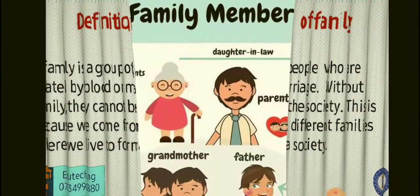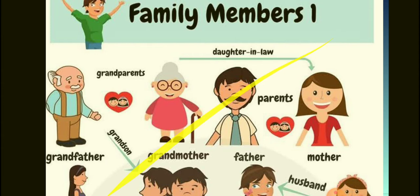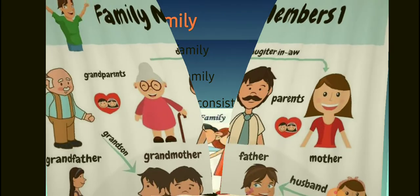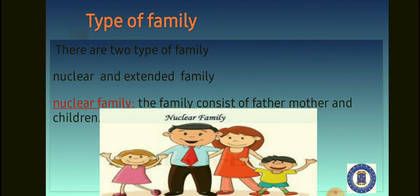This is a picture of a family — these are family members. You can see the grandfather, the grandmother, the grandchildren, the parent, the husband, the wife. Now we'll move forward to types of family. There are two types of family: the nuclear and the extended family.